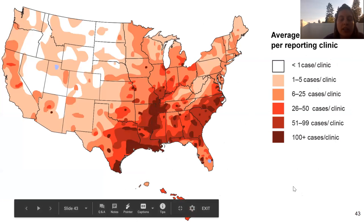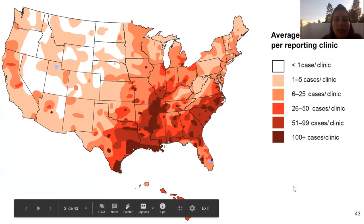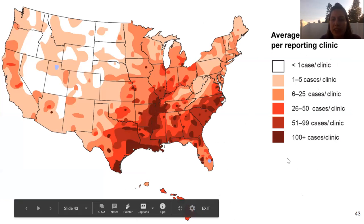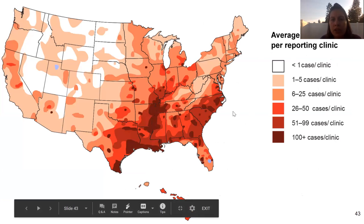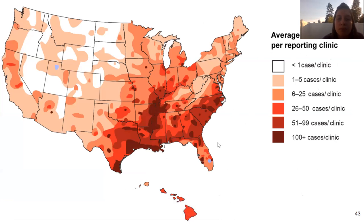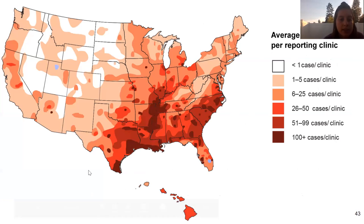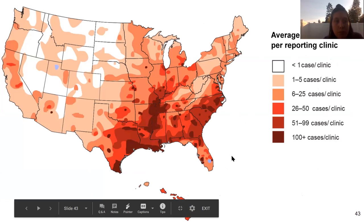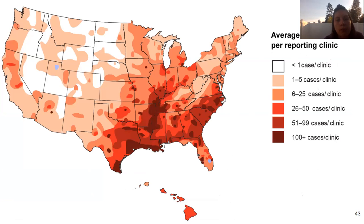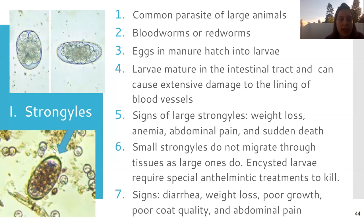This chart shows the number of heartworm cases in the United States — from around 2017. The darker the color, the larger the number of cases, and we can see that the Southeast is really dark. Because of how many mosquitoes we have, it's just the environment we live in — ideal for mosquitoes means heartworms are also going to be very common here.